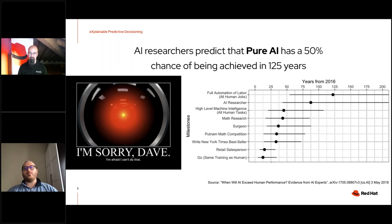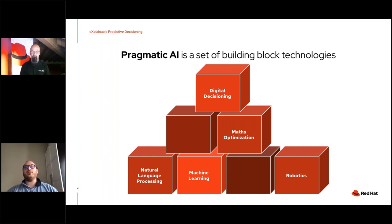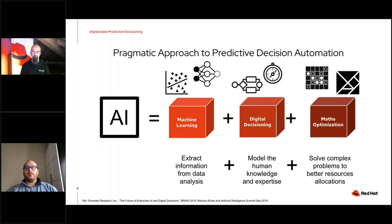We are quite far from an AI that can completely replace humans, but this doesn't mean we cannot already benefit from AI systems. Let's introduce another definition: pragmatic AI. In pragmatic AI, we define a set of building block technologies — digital decisioning, mathematical optimization, natural language processing, machine learning, and robotics. Each building block provides specific features and, combined, they can already solve business problems.